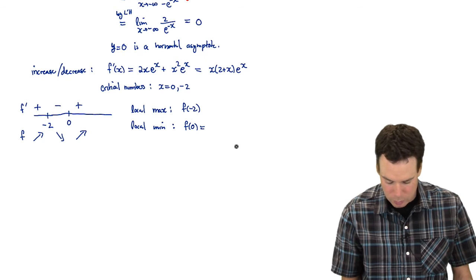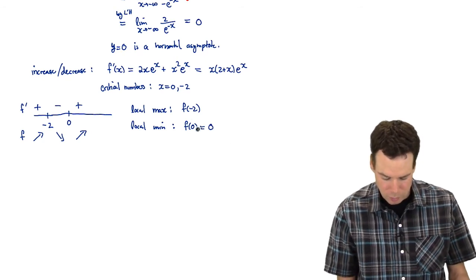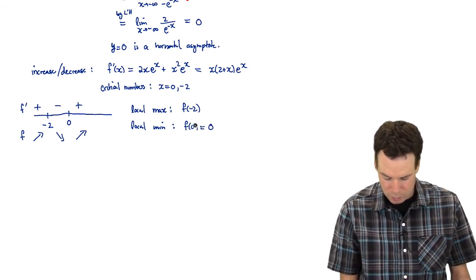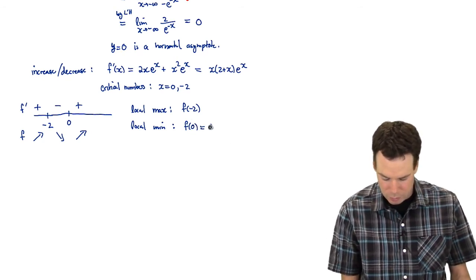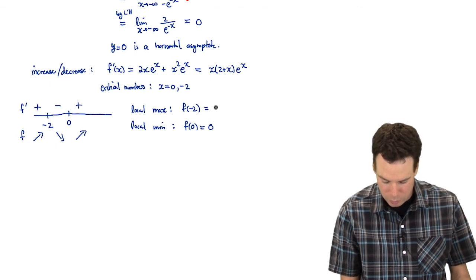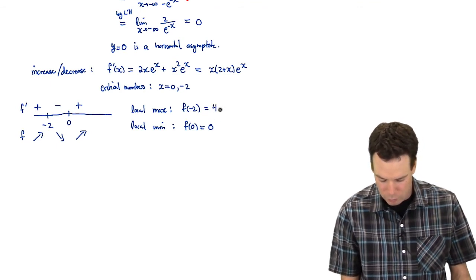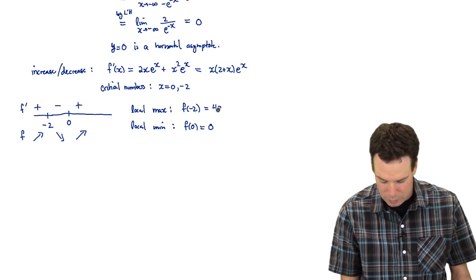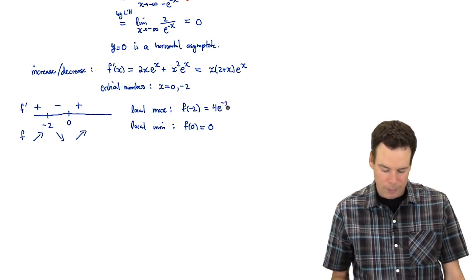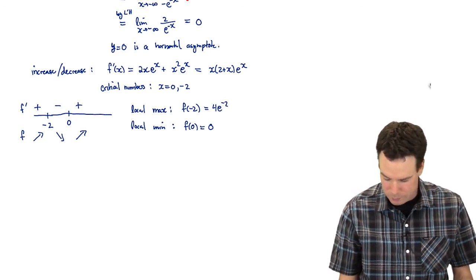We have a local maximum at x = −2 and a local minimum at x = 0. Plugging 0 into x²eˣ gives 0. Plugging in −2 gives 4e^(−2). So those are our local extrema values.